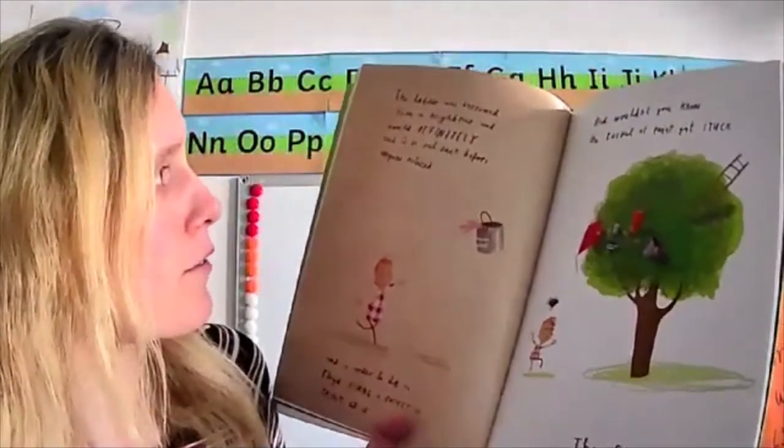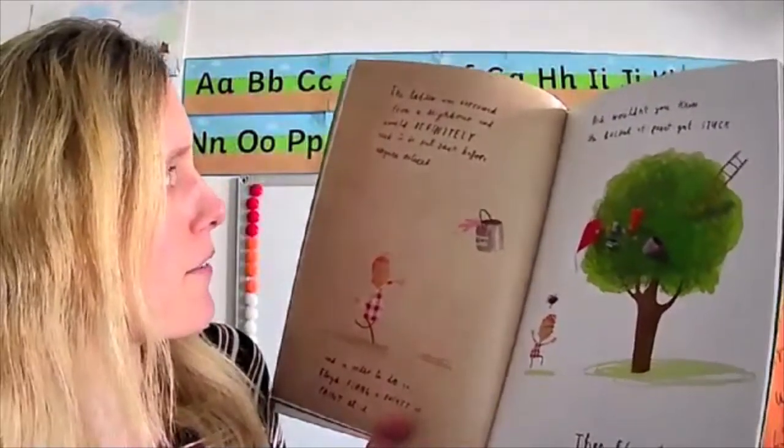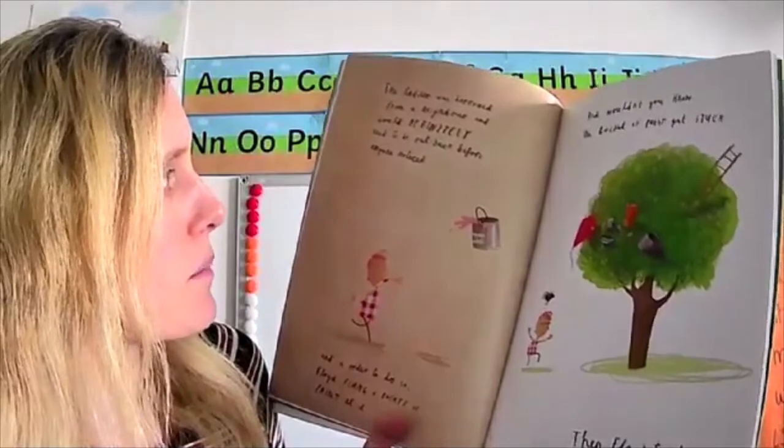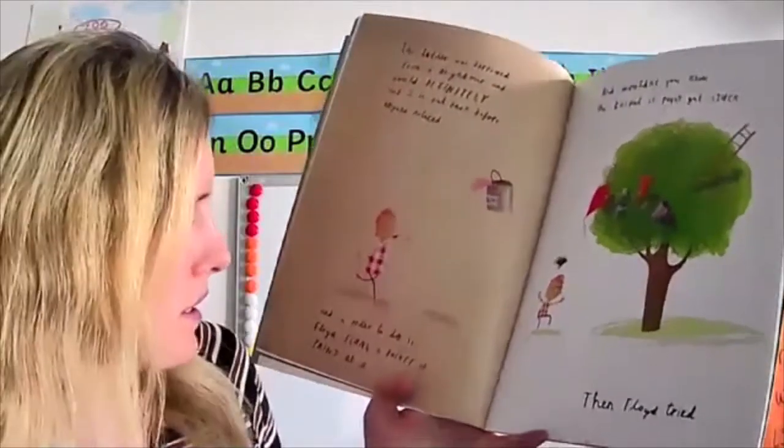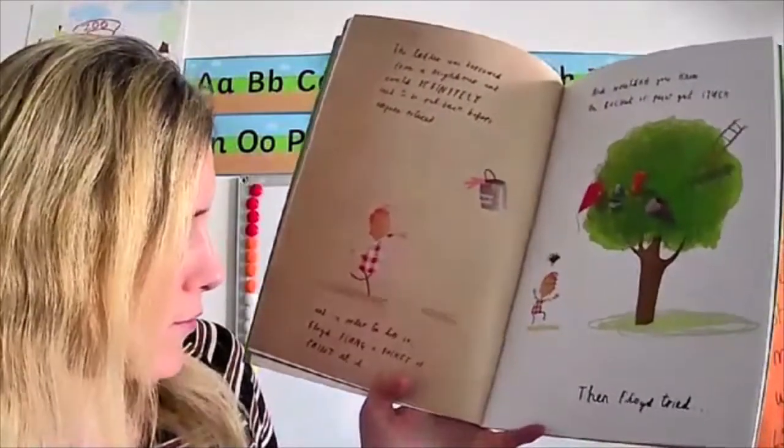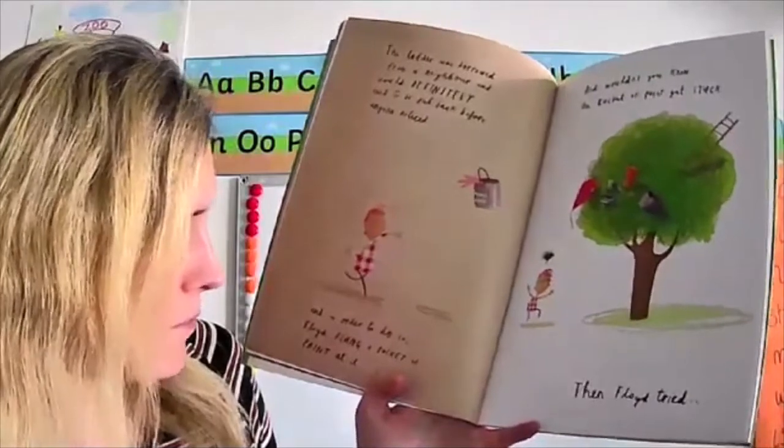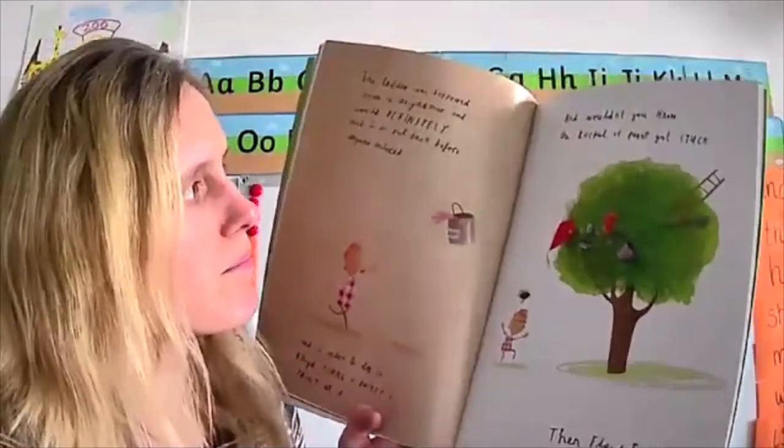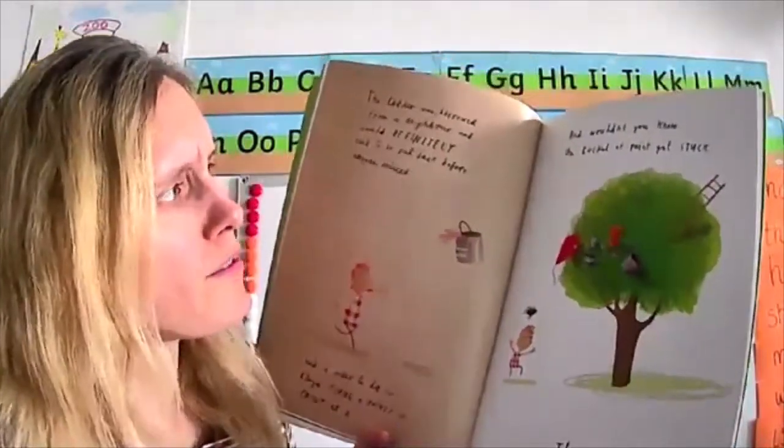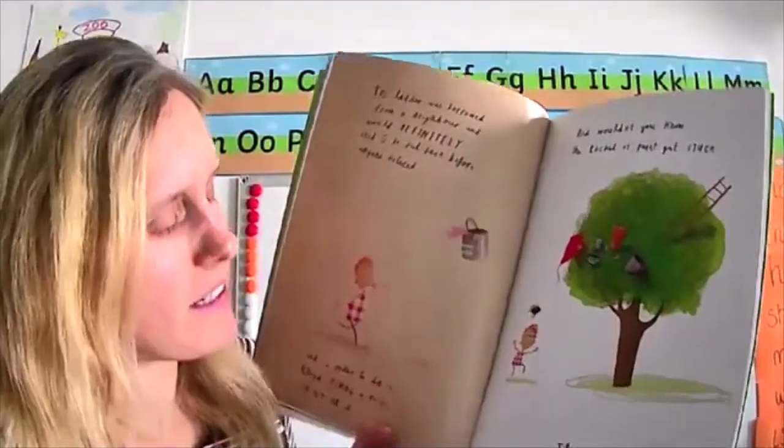The ladder was borrowed from a neighbour and would definitely need to be back before anyone noticed. And in order to do so Floyd flung a bucket of paint at it. And wouldn't you know the bucket of paint got stuck.